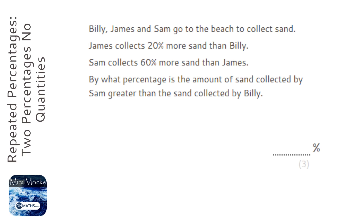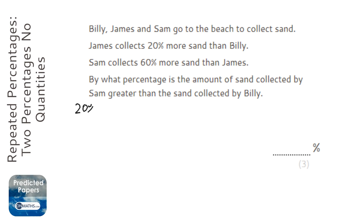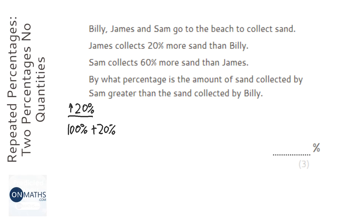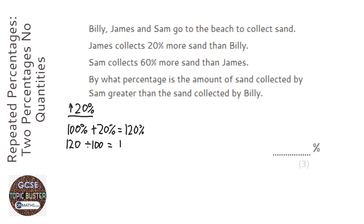The easiest way to do this question is to use multipliers. A real common wrong answer to this is 80%, and I'm going to show you why that's not correct. So I'm going to work out the multipliers first — an increase of 20% first. Starting with 100%, adding 20% gives me 120%. As a multiplier, 120 divided by 100 equals 1.2.